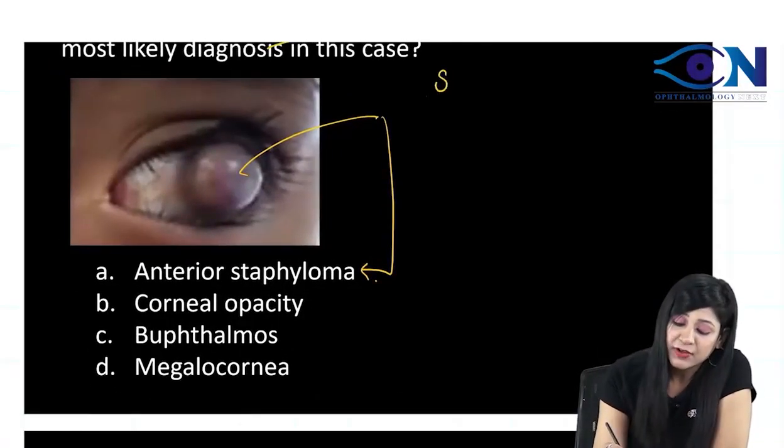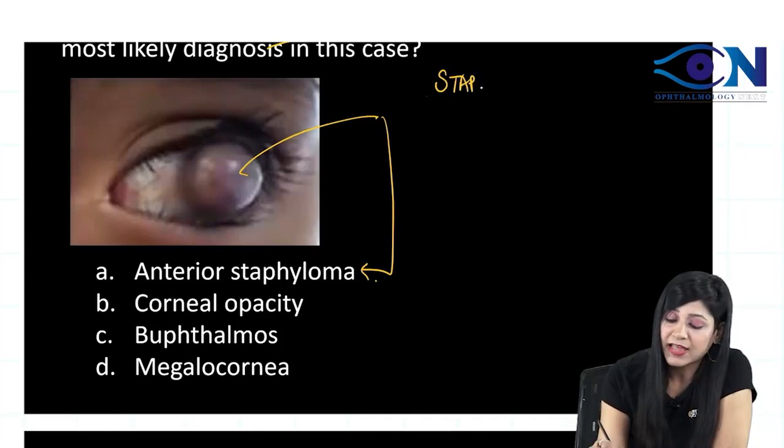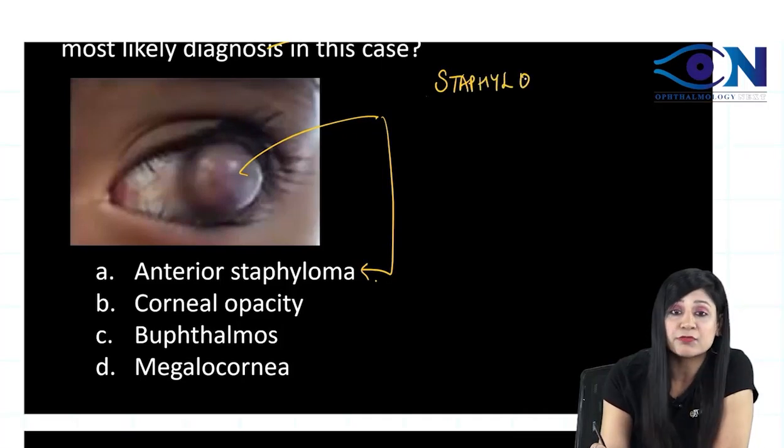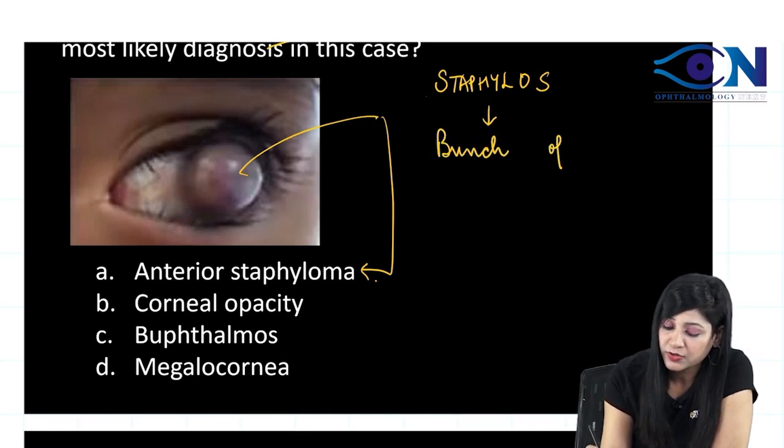Now, anterior staphyloma - staphyloma word actually comes from the word staphylose and staphylose means we will have the bunch of grapes-like appearance.